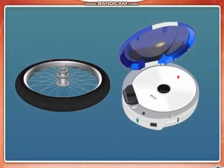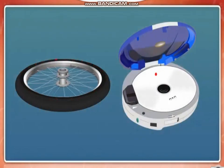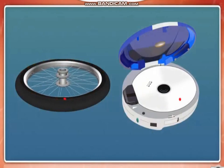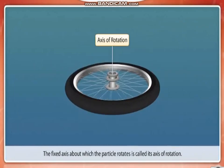In all of these examples, each particle in the rigid body executes a circular motion about a fixed axis. The fixed axis about which the particle rotates is called its axis of rotation.